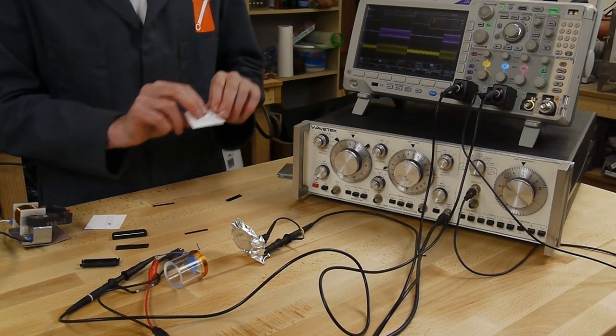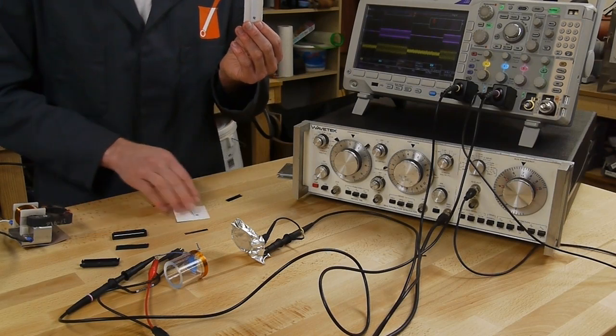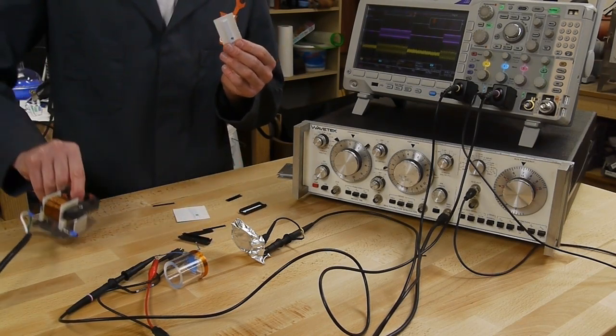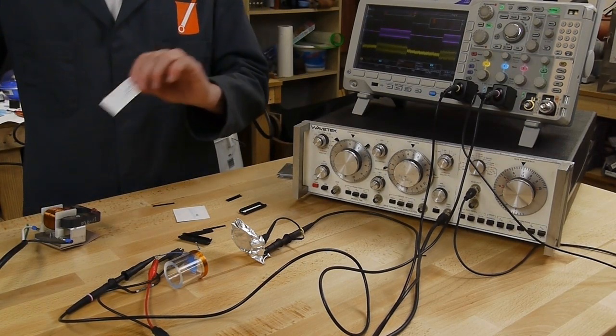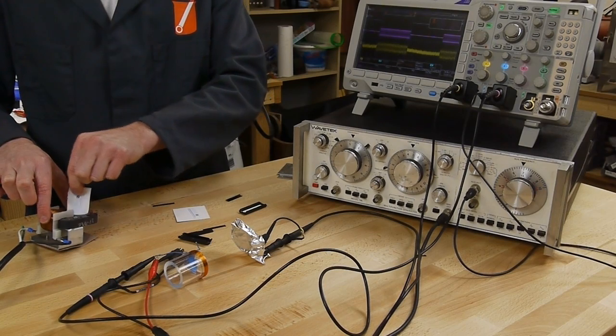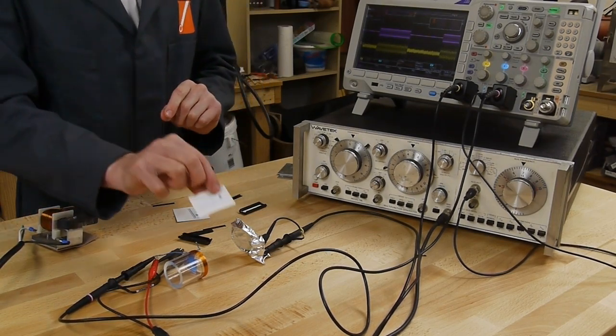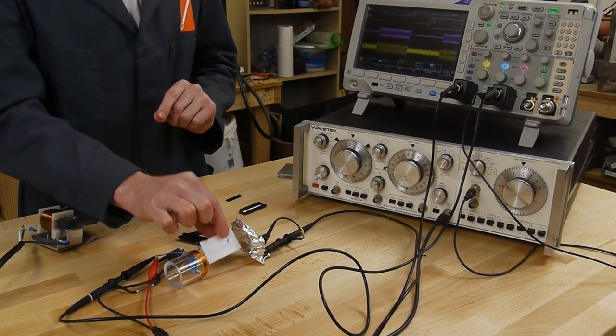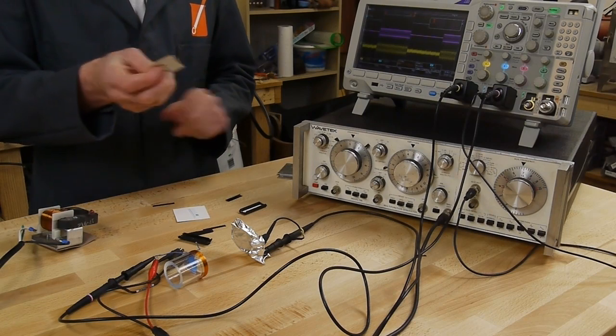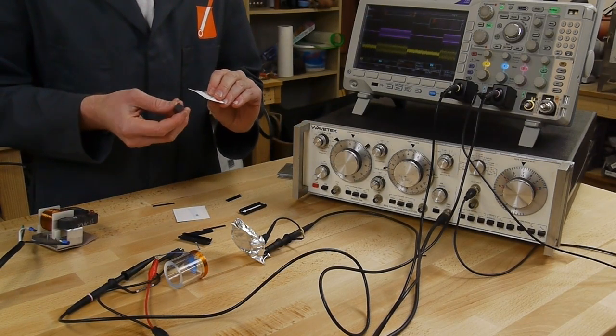We just saw that this tag is working - you can see a pretty big response there. I'm going to demagnetize it by putting it into this open frame motor from which I've removed the rotor. I'll switch this on and just kind of put the tag through it carefully without shocking myself, hopefully. Let's see how it responds now. It's pretty much gone - we don't see the same response at all. This is demagnetized and we're not getting the response.